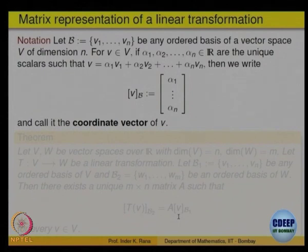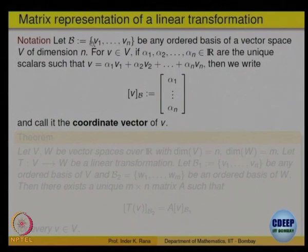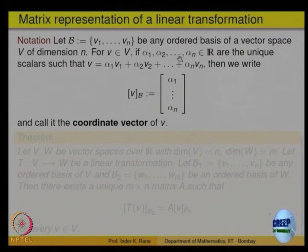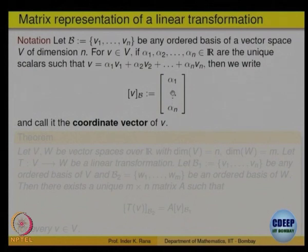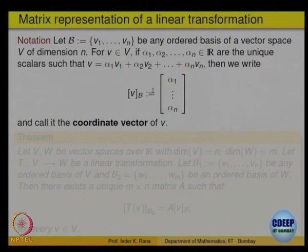We then looked at what is called the matrix of a linear transformation. Given an ordered basis V1, V2, …, Vn for V, for any vector v in V there exist unique scalars α1, α2, …, αn such that v is a linear combination. These unique scalars, put as a column vector, are called the coordinate vector of v. These are called the coordinates — how much you go in the direction of each basis vector.